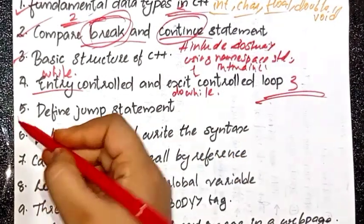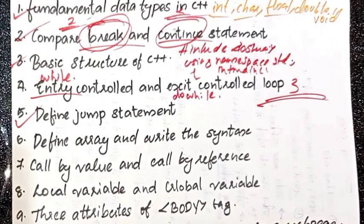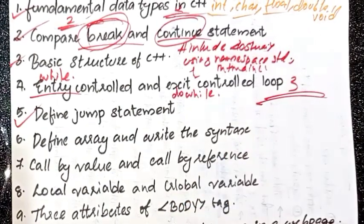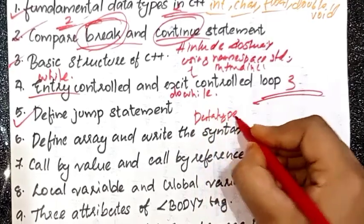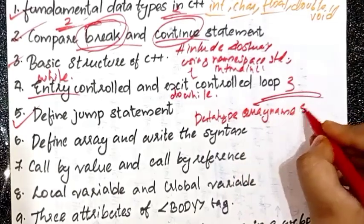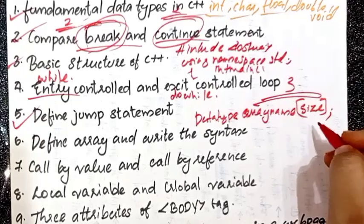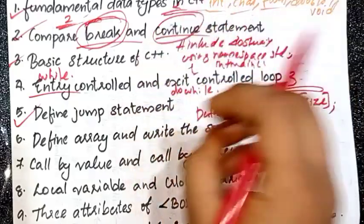Then the next one is: define array and write the syntax. We will write the syntax of array. The syntax of array is: data type, array name, then size. We will write the syntax of array.